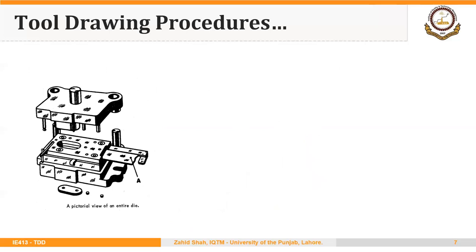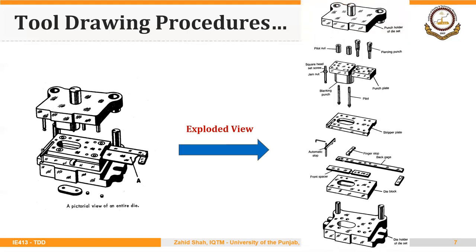We will repeatedly need assembly drawings in this course. An assembly drawing shows all parts and components at their original position. This is an isometric view of a punching and blanking die. It can be hard to understand the position of different parts or how they will fit together just by looking at such an assembly drawing, so we need an exploded view to better understand where different parts will fit.